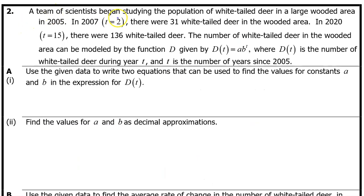A team of scientists began studying the population of white-tailed deer in a large wooded area in 2005. In 2007, t equals 2, there were 31 white-tailed deer in the wooded area. In 2020, t equals 15, there were 136 white-tailed deer.